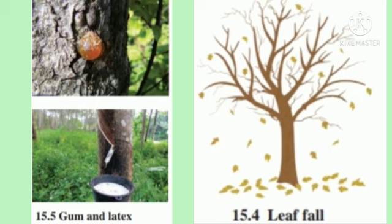Gaseous substances are given out by diffusion. Most of the waste substances of the plant are stored in the vacuoles of the leaf cells and in flowers, fruits, and bark of the stem. After some time, these parts fall off. Some other waste materials are stored in old and woody xylem in the form of resins and gums. Some waste materials are also given out through the roots into the surrounding soil. In some plants, waste materials are present in the form of crystals of calcium oxalate. They are called raphides. As they are needle-shaped, they prickle and cause irritation of the skin.